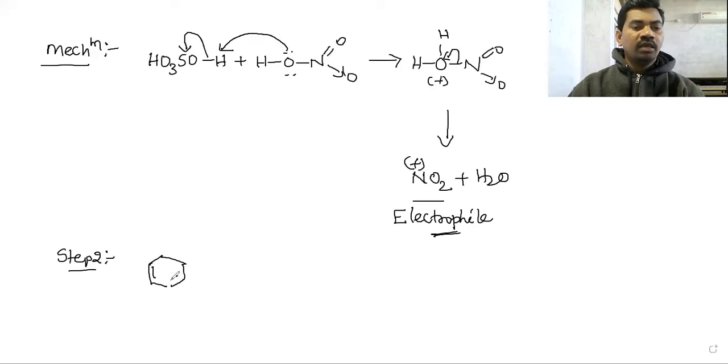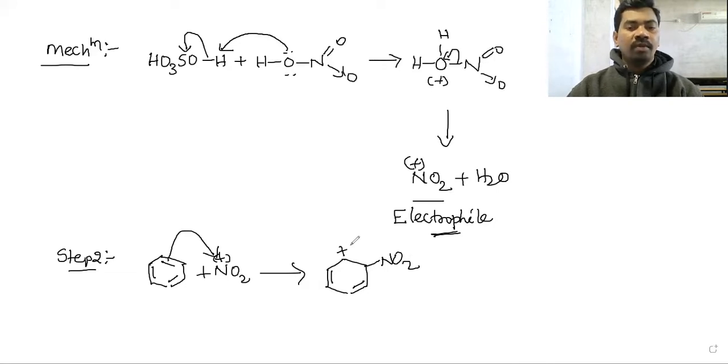Benzene's three pi electrons attack NO2 plus. The pi electrons attach to carbon forming NO2 bonding. The remaining two pi bonds leave NO2. Carbon has positive charge in vacant orbital. Hydrogen bond donates and H plus is released.